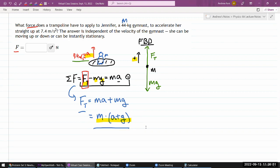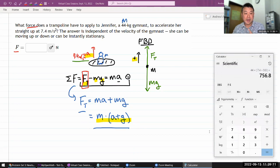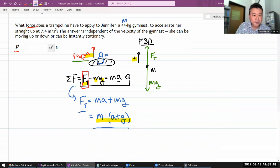In any case, I got an answer here. Let me just plug in the numbers. Mass, 44 kilogram times, let me do parenthesis, my calculator does that. 7.4 meter per second squared plus 9.8 meter per second squared. And I need to say equal. That's the answer. So let me just write the dot, 756.8 or 757 newtons.